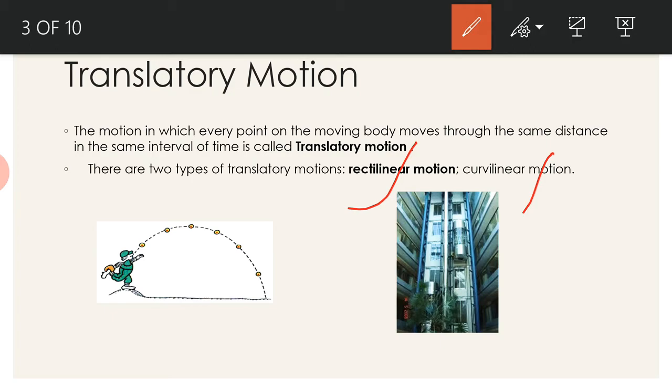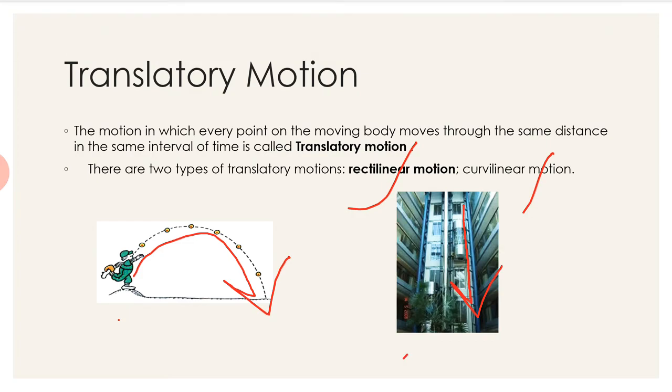In rectilinear motion, the moving body moves the same distance in the same interval of time following a straight path. Here is an example of throwing a ball and the motion of an elevator.